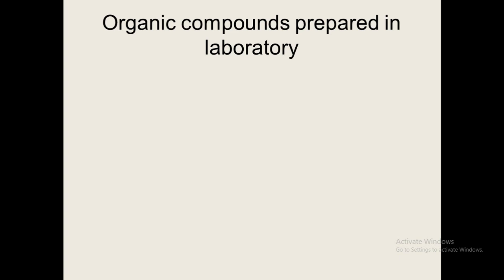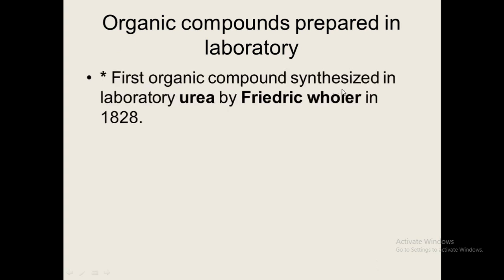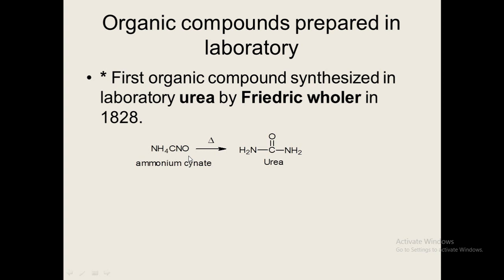Historically, organic compounds were obtained from plants and animals. But later on, organic compounds were prepared in the laboratory. Chemists tried to synthesize organic compounds in the laboratory. The first organic compound synthesized in the laboratory was urea, by scientist Frederick Wöhler in 1828. This compound is urea. It is obtained from the inorganic compound ammonium cyanate (NH₄CNO). When ammonium cyanate is heated, urea is obtained. The formula of urea is NH₂CONH₂.